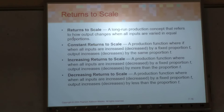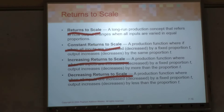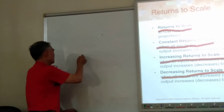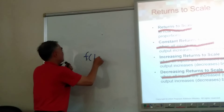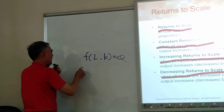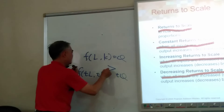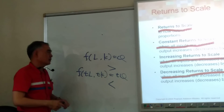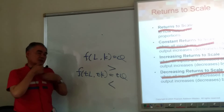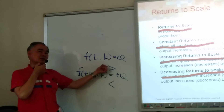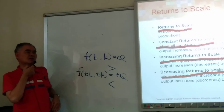Now, returns to scale. We say you have constant returns to scale, increasing returns to scale, and decreasing returns to scale. This concept has a question in the homework, so be very familiar with it. If F(L, K) = Q, then F(tL, tK) compared to tQ — greater than, equal to, or less than — determines the type of returns to scale.